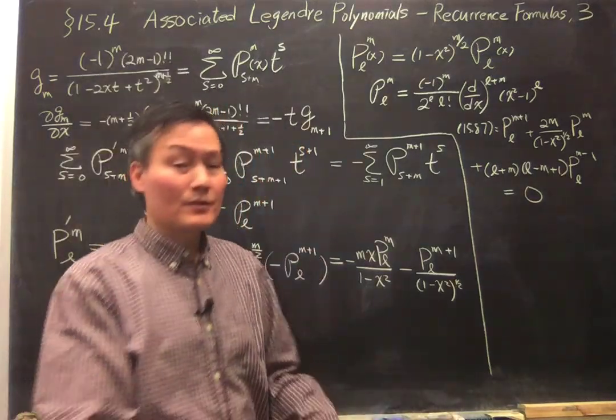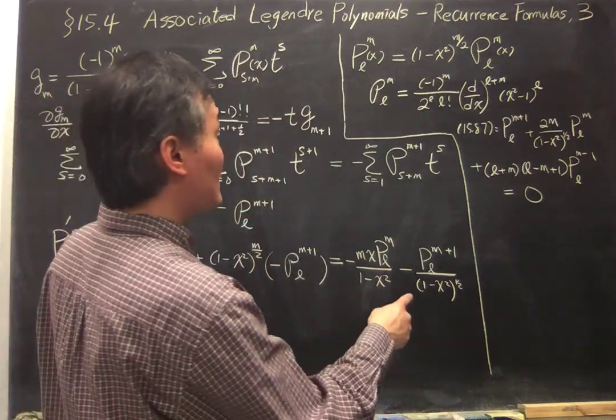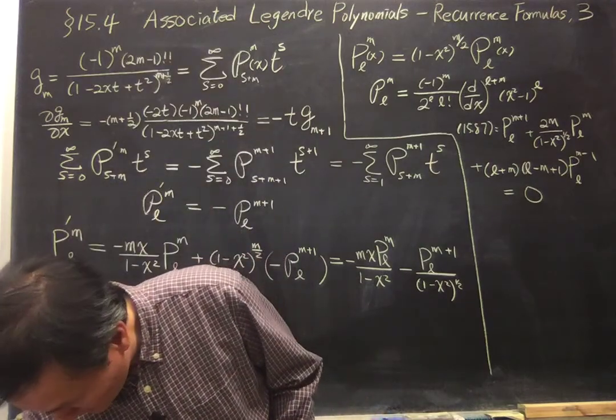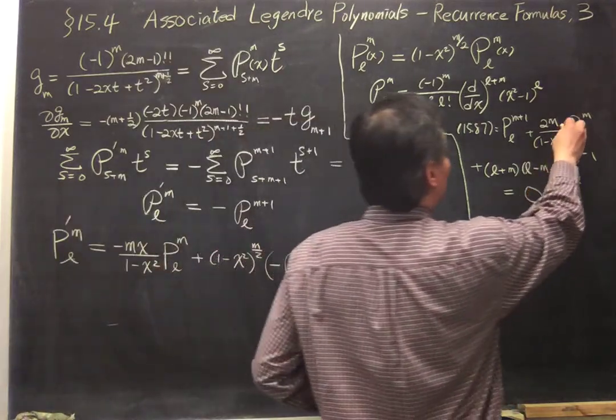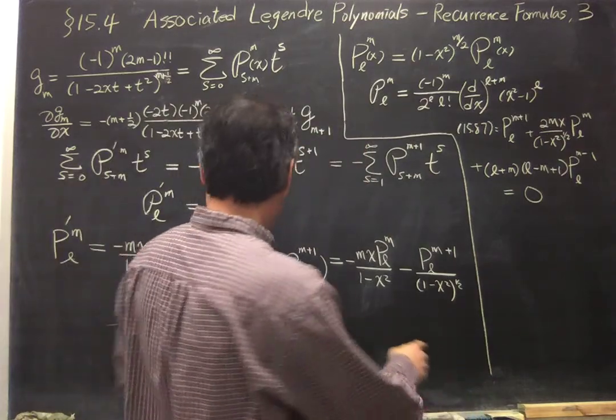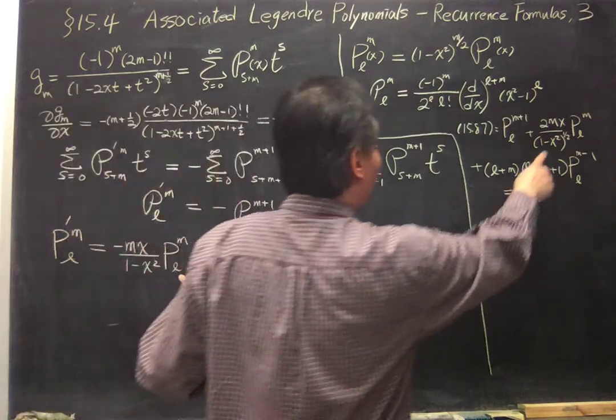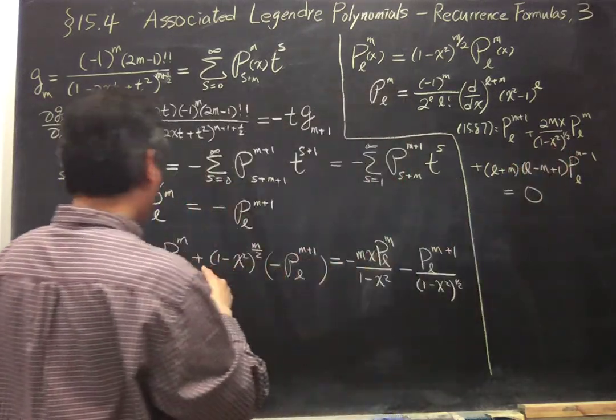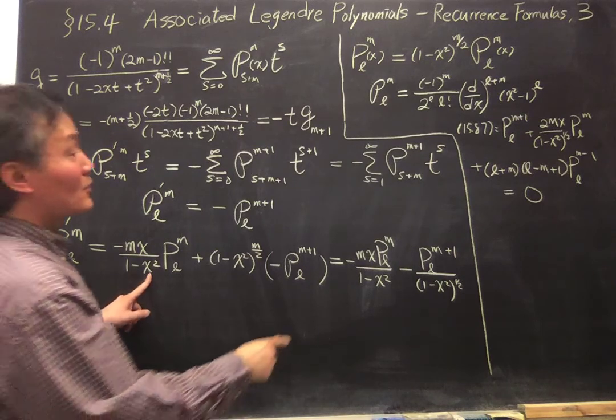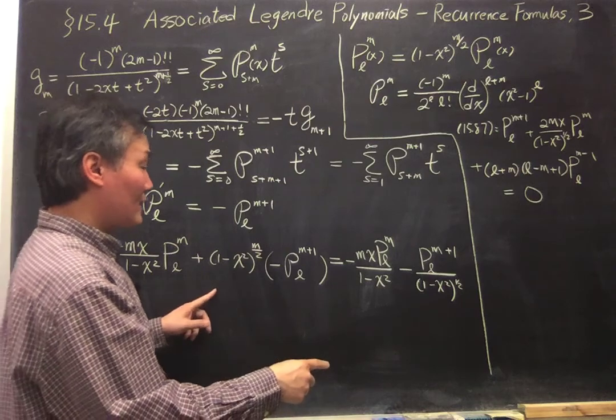Alright, so what we will do is use this formula. I think I missed an x, m x. Alright, this m x PL m is similar to this one except that this is 1 minus x squared so you have 1 minus x squared to the one-half power left.